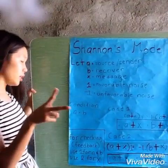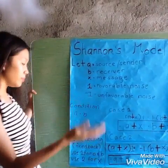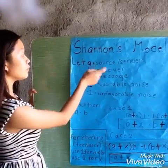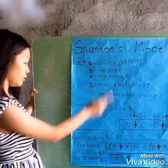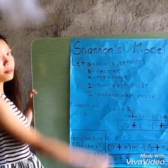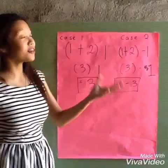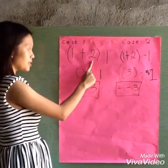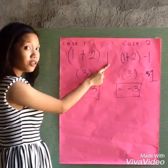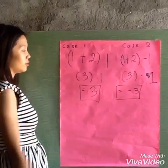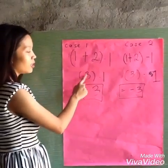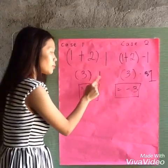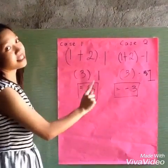For checking, we will know if there is feedback. Use one for A and B, and use two for X the message. For case number one with favorable noise: the sender is one, the message is two, and the favorable noise is positive one. One plus two equals three, times the favorable noise times one: three times one equals positive three.